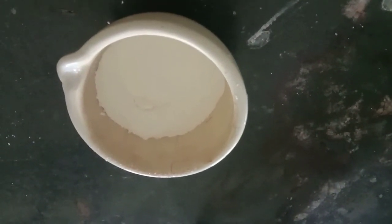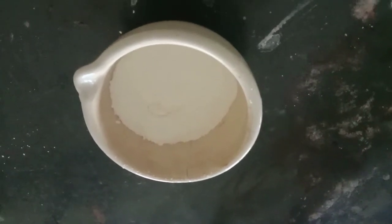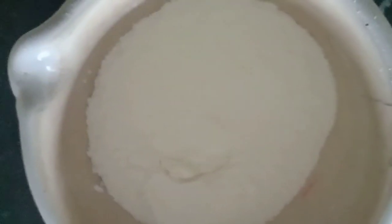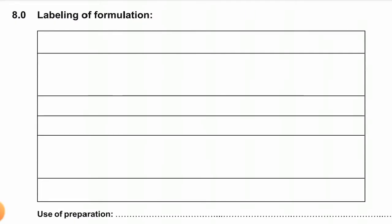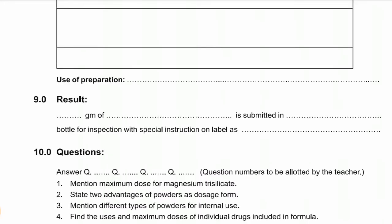Our compound magnesium trisilicate oral powder mixture is ready and we have to store it in a wide-mouth container. Here is the space for labeling the formulation. The use of the preparation is as an antacid or for relief of indigestion. You can write the results as: 10 g of compound magnesium trisilicate oral powder is submitted in a wide-mouth bottle for inspection, with special instruction on label as directed by physician. In this way we have performed the practical.